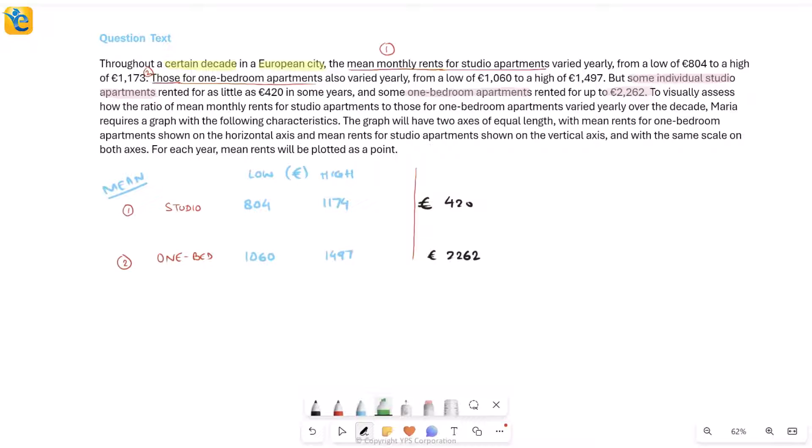To visually assess what ratio of mean monthly rents for studio apartments to those of one bedroom varied. Basically, how did this ratio vary over the decade? You were seeing all of this for a certain decade. Now you want to see how this ratio of the actual mean monthly rents for these two types of places is changing in this 10-year period. To do this, they've told you about something that Maria wants to do. She requires a graph. And what should the graph be like? The characteristics are here. Now let's see, what can we understand about this graph?